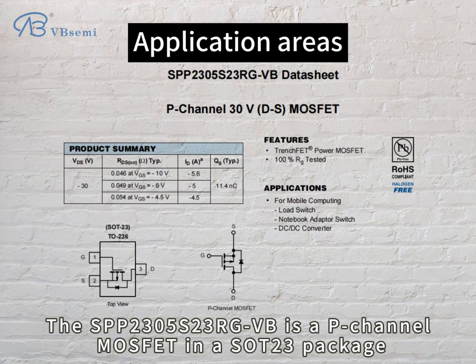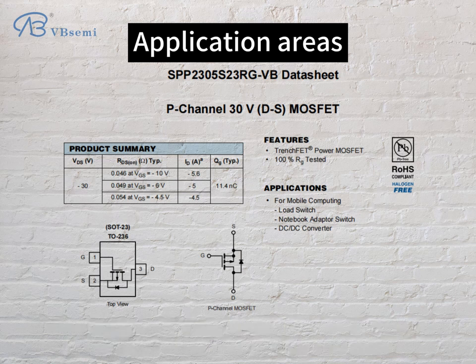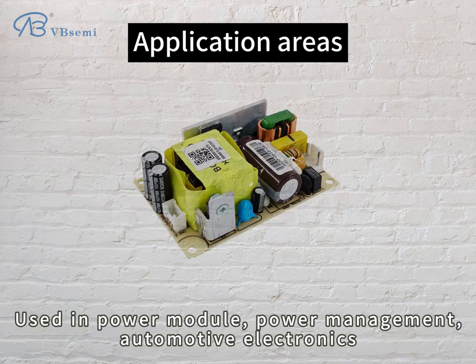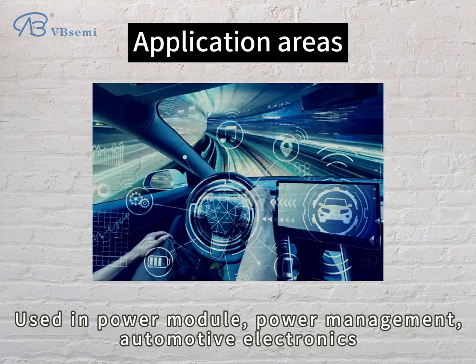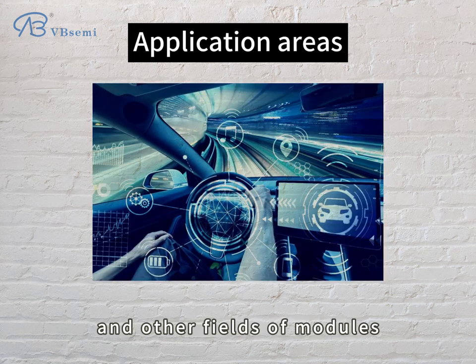The SPP2305-S23-RGBB is a P-Channel MOSFET in a SOT-23 package, used in power modules, power management, automotive electronics, and other application fields.